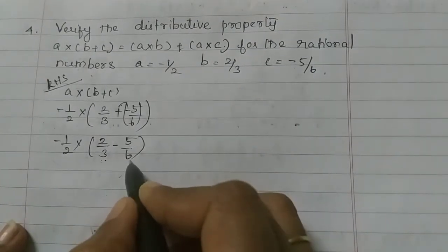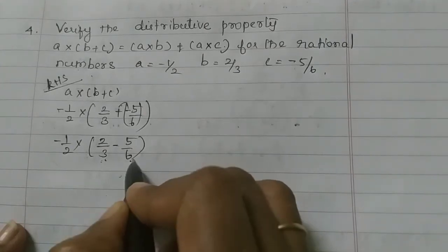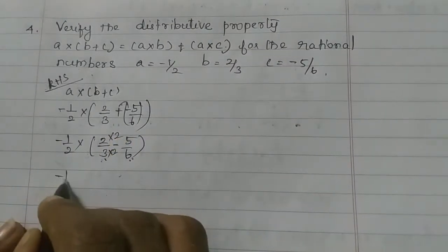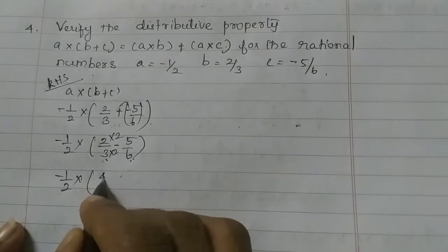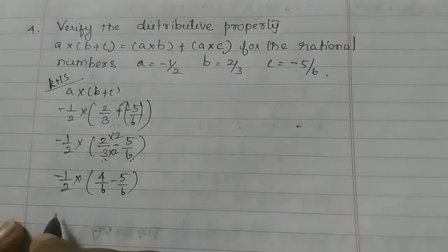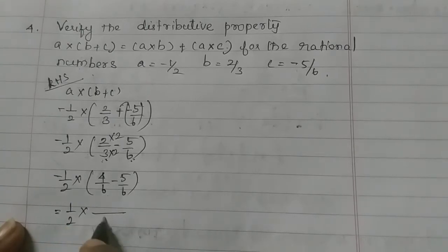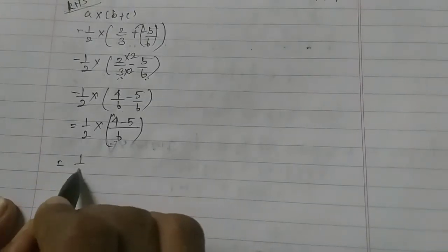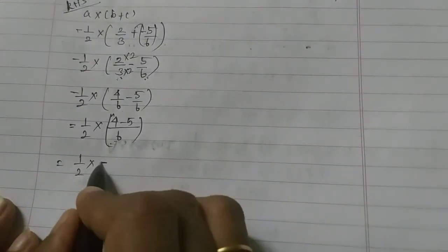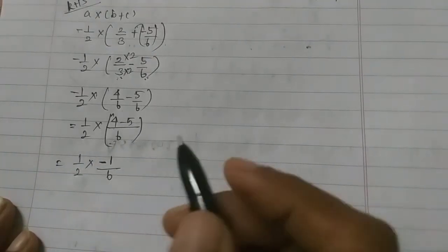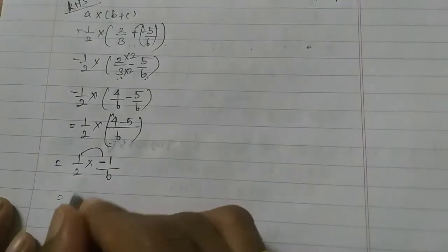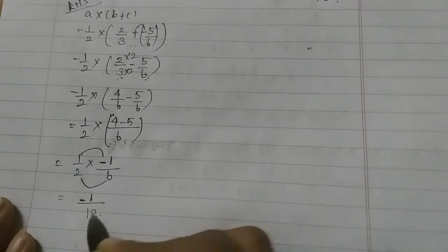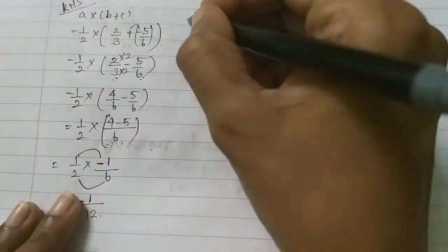The denominator is equal to the LCM — the 3 table is 6, so we multiply by 2. So now minus 1 by 2 into 4 by 6 minus 5 by 6. This equals minus 1 by 2 into, taking 6 as common, 4 minus 5. That gives 1 by 2 into minus 1 by 6. Numerator into numerator, denominator into denominator: 1 into minus 1 is minus 1, 2 into 6 is 12. So the left hand side equals minus 1 by 12.